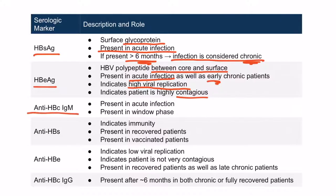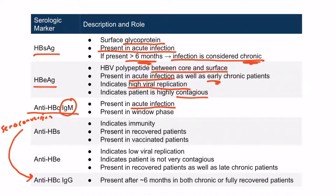Next, we see the antibodies against the core. Initially these take the form of IgM antibodies. Later there is seroconversion, which refers to the type of antibody changing — in this case from IgM to IgG. This IgM antibody, seen during an acute infection, may be the only marker during the window phase. The core antigen itself is not listed on this table because our lab tests cannot detect it — we only detect the antibody against the core.